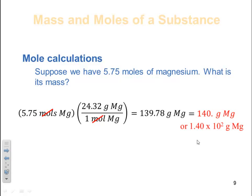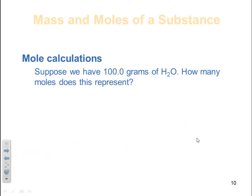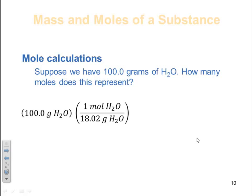Make sure your molar mass has as many or more significant figures than your given value. Here's another example: convert 100 grams of water to moles. Use molar mass (18.02 g/mol) and put grams in the denominator to cancel. Starting with 100 g H₂O × (1 mol / 18.02 g) gives 5.549 moles of water. This simple calculation — going between grams and moles — is something you'll do many, many times.